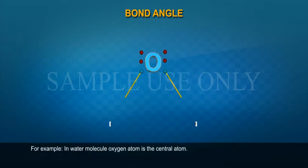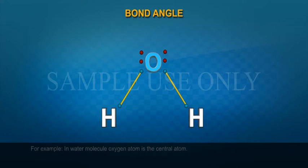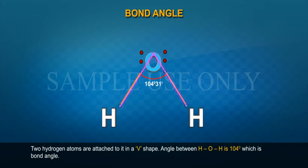For example, in water molecule, oxygen atom is the central atom. Two hydrogen atoms are attached to it in a V-shape. The angle between H-O-H is 104.5 degrees, which is the bond angle.